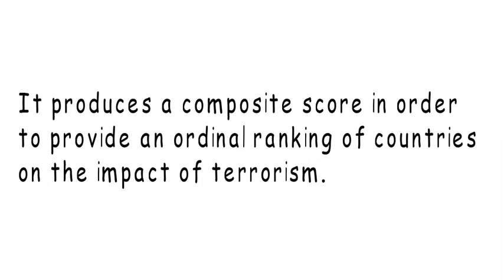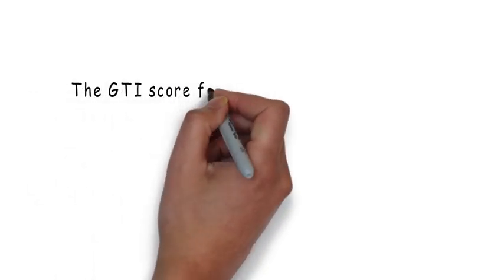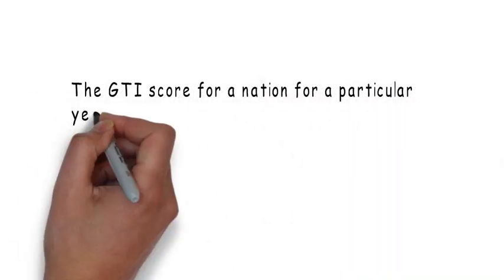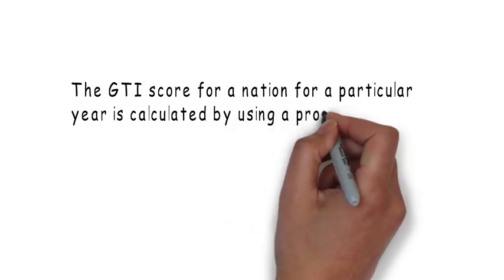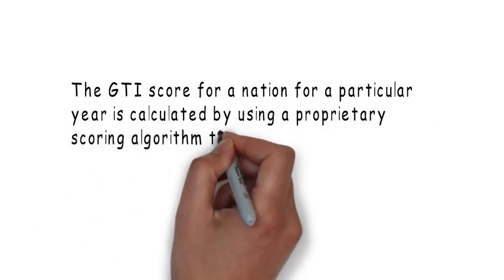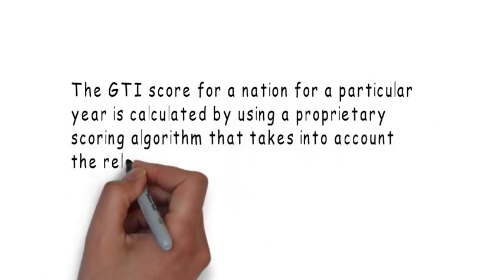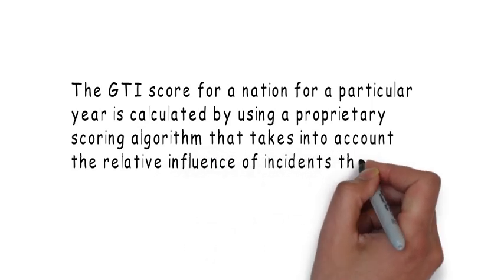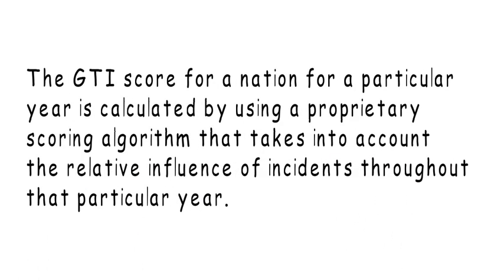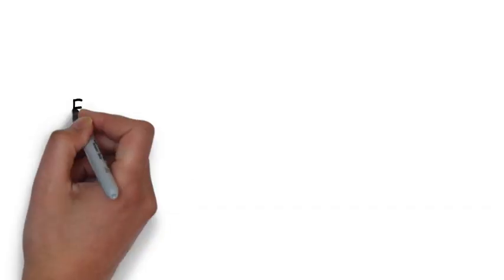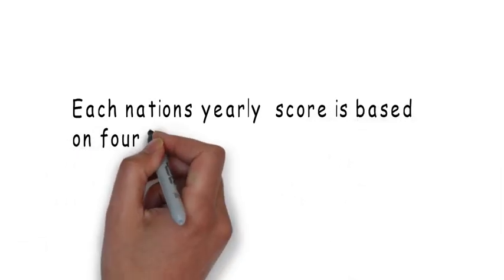The GTI score for a nation for a particular year is calculated by using a proprietary scoring algorithm that takes into account the relative influence of incidents through that particular year.